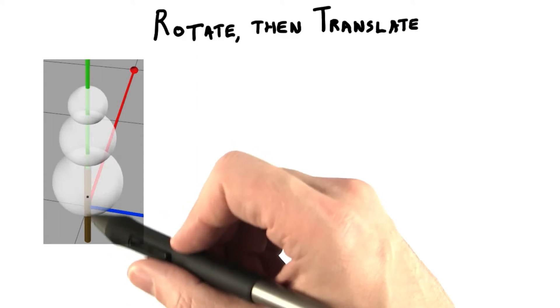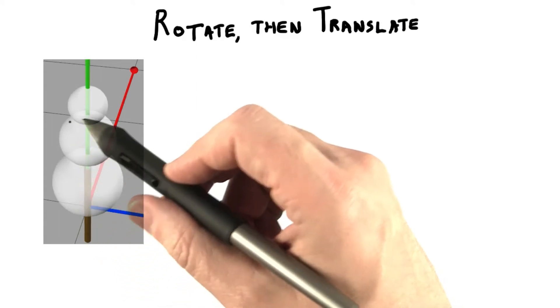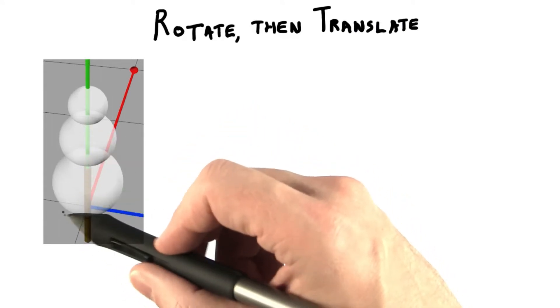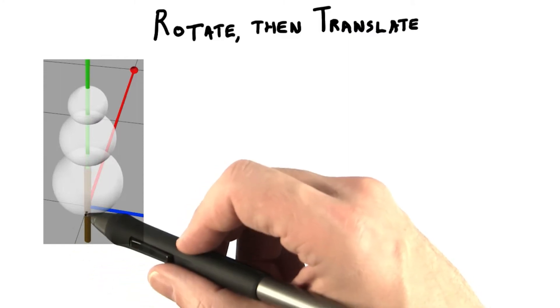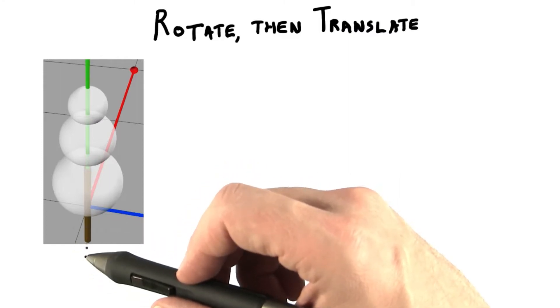Here's the stick without any transforms on it. I've made the snowman transparent and removed the ground plane so we can see the stick's position. It's actually inside the snowman, halfway through the ground.